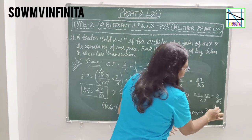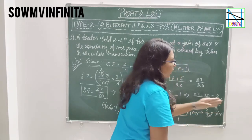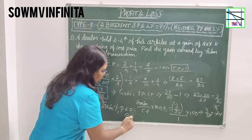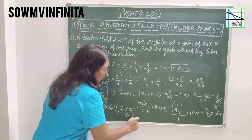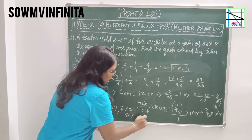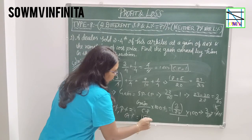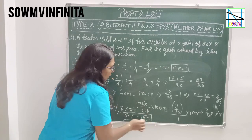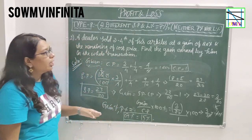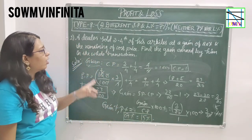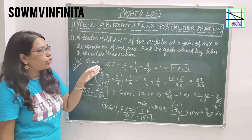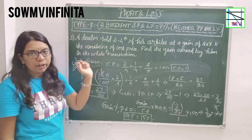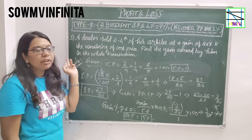Simplifying: 25s cancel, giving 3/5 × 5 = 15%. Therefore, Gain Percent equals 15%. This is a 15% gain for the whole transaction of these articles.